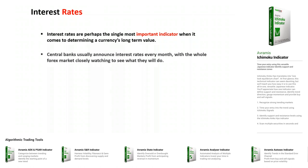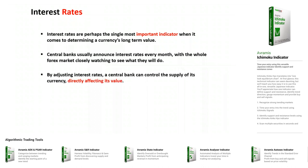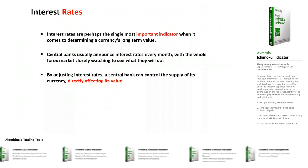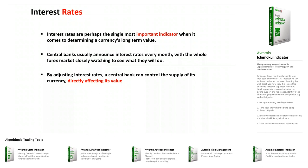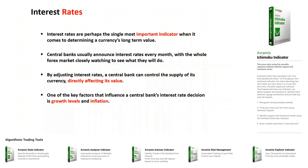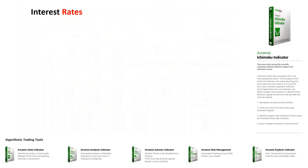Central banks usually announce interest rates every month, with the whole forex market watching closely. By adjusting the interest rate, a central bank can control the supply of its currency, directly affecting its value. It's a powerful tool the government has to guide the exchange rate. One of the key factors influencing a central bank's interest rate decision is the growth level and the inflation rate. In simple terms, if you want to take out a loan or a mortgage to build a house, you borrow money from a bank at a certain interest rate.